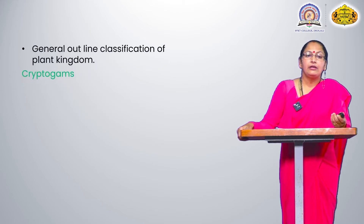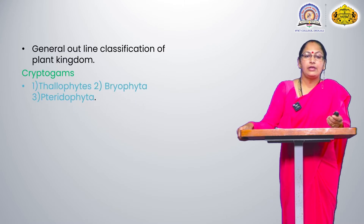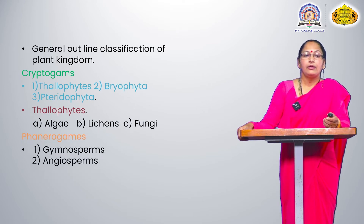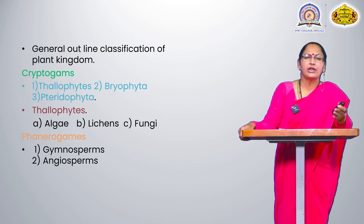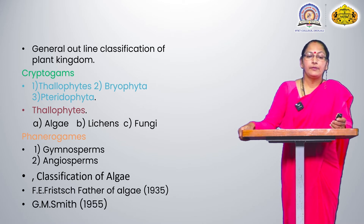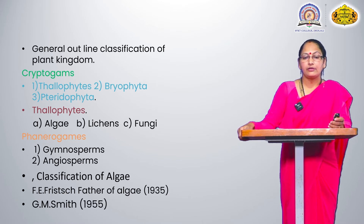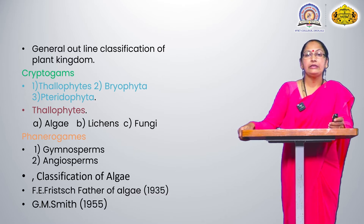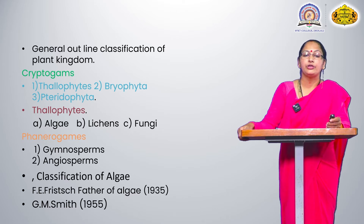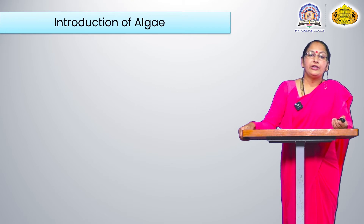In general, these all points — cryptogames, thallophytes, bryophytes, pteridophytes — were seen in the last lecture. In the classification of algae, Fritsch in 1935 is called the father of algae and derived 11 classes. Next, in our syllabus, G.M. Smith in 1955 derived seven classes of algae.